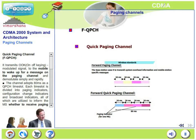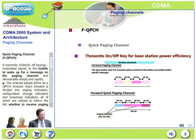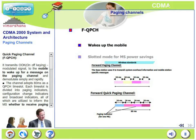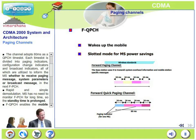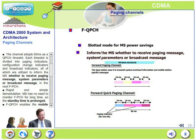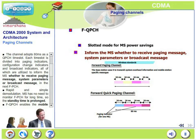The quick paging channel transmits an on-off keying modulated signal to the mobile to wake up for a message on the paging channel and demodulate simply and rapidly. The channel adopts 80 milliseconds as a QPCH time slot. Each time slot is divided into paging indicators, configuration change indicators, and broadcast indicators — all of which inform the mobile whether to receive a paging message, system parameters message, or broadcast message in the next forward paging channel.